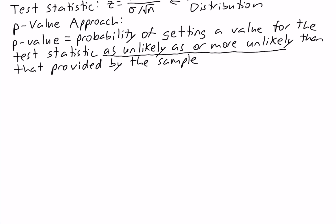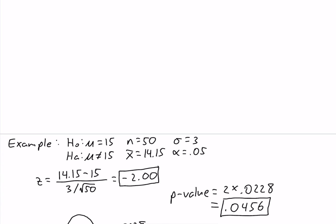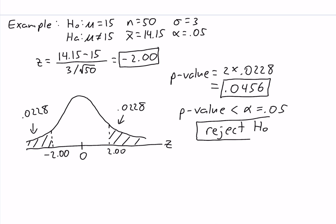Our rejection rule for the p-value approach says to reject the null if the p-value is less than or equal to alpha. Our p-value is 0.0456, which is less than our alpha of 0.05, so our conclusion is to reject the null. Since we're rejecting the null, we accept the alternative and conclude that the population mean is not equal to 15.